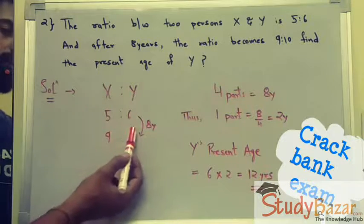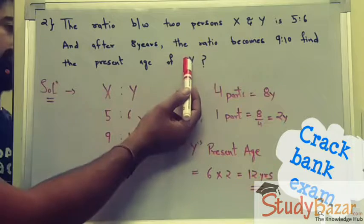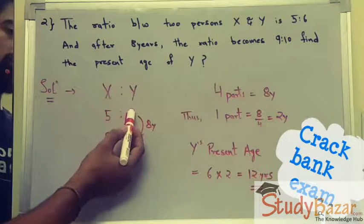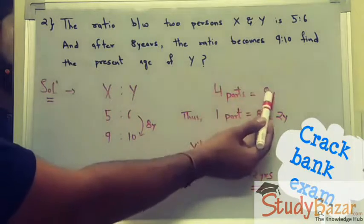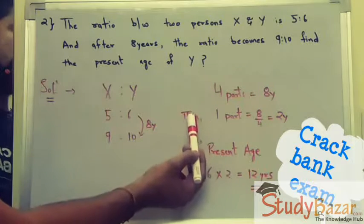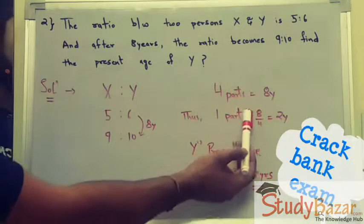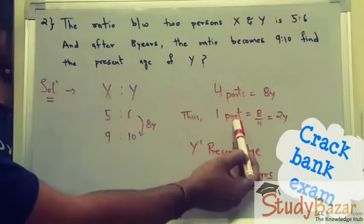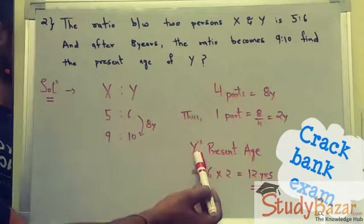As we have to find the present age of Y, we are going to focus on Y only. The ratio of Y goes from 6 to 10 — the difference in eight years is 4. So four parts is equivalent to eight years. To find one part, we divide: one part equals 8 divided by 4, which equals 2. So one part is equivalent to 2 years.